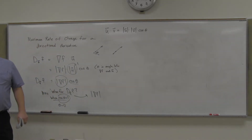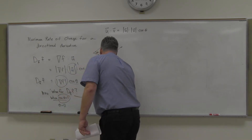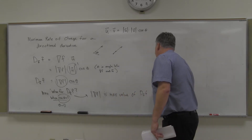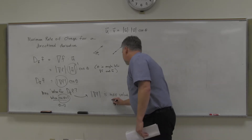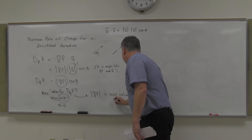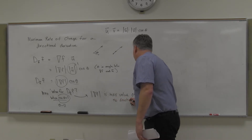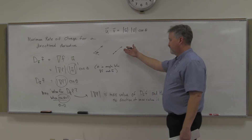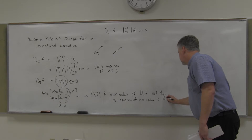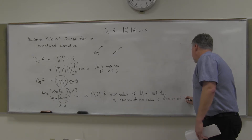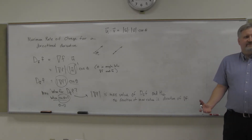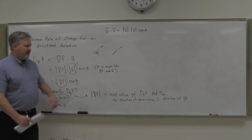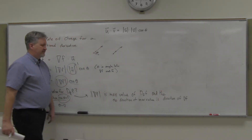They're going in the same direction. So the maximum occurs — this is the maximum value of the directional derivative — and the direction of that maximum value is the direction of your gradient vector. In other words, it's the gradient vector itself. You can have many vectors in that direction, but that's the key idea.